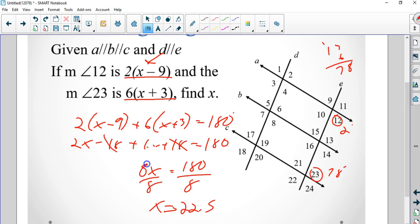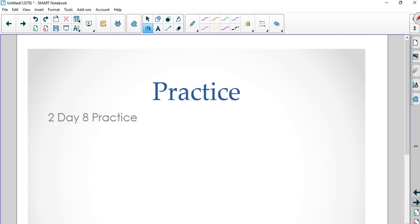So we plug in 22.5. 22.5 minus 9 is 13.5 times 2 is 27. So angle 12 is 27 degrees. Then we have 22.5 plus 3 which is 25.5, 25.5 times 6, 153. 153 degrees plus 27 is 180 degrees, so that does check out, and that's our notes.